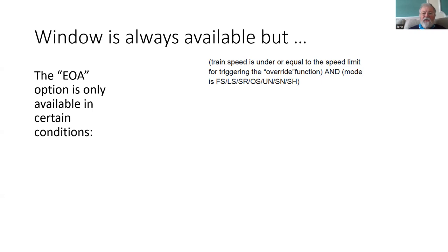That speed condition applies if the mode is any of the modes which allows the train to be moving: full supervision, limited supervision, on-site, staff responsible, unfitted, system national, or shunting. So if the train could be moving and therefore could be moving towards an end of authority — although that doesn't really exist other than procedurally for some of those — then the override can be selected.